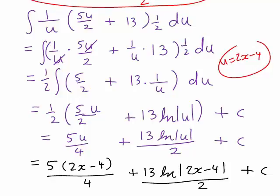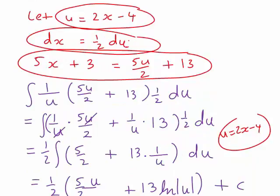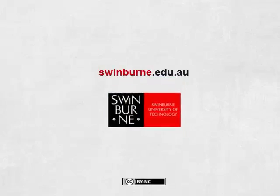If we look back at what we did, we had a linear function divided by another linear function, so we let the linear function on the denominator equal u. That then allowed us to do a substitution in order to be able to evaluate our integral.